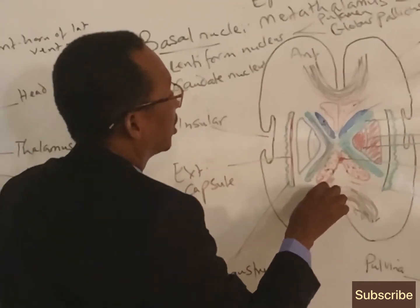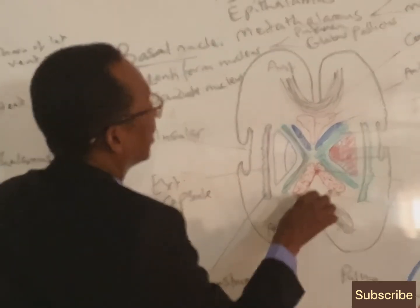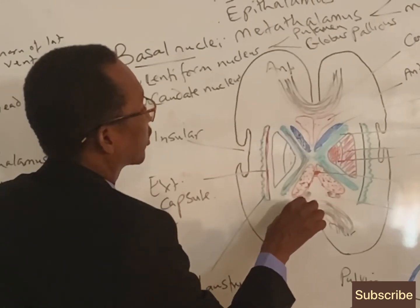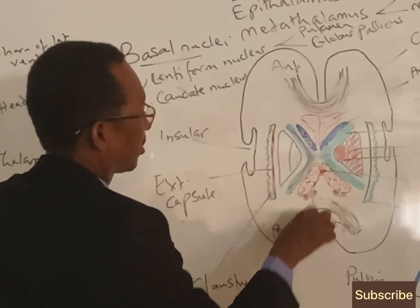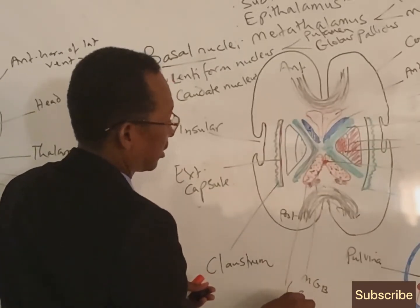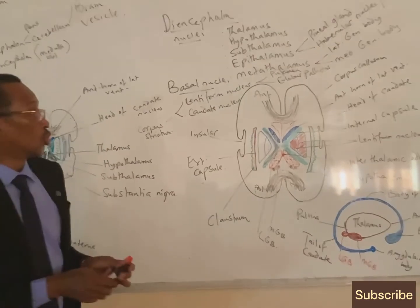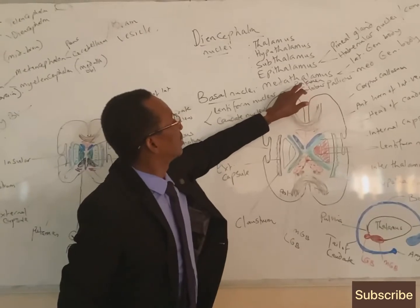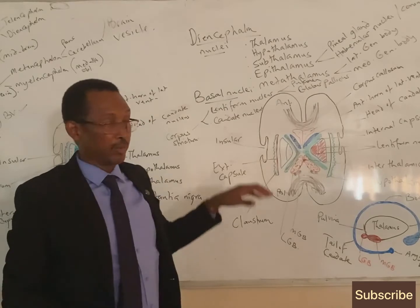In this section you can also see the metathalamic nuclei: one large nucleus on the medial side, called the medial geniculate body (MGB), and another nucleus slightly lateral, called the lateral geniculate body. The lateral geniculate body and medial geniculate body are both part of the metathalamus.